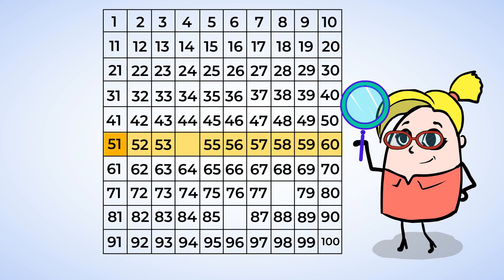51, 52, 53, 54. Aha! The missing number is 54. So we write a 5 and a 4.